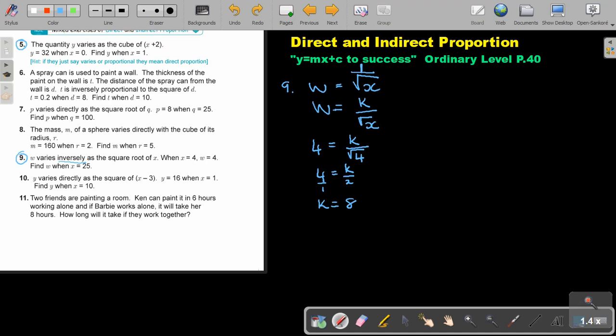So I have now that the value of k is going to be 8. And now I substitute. So here I'm substituting in. So w equals 8 over square root x. This is my equation.